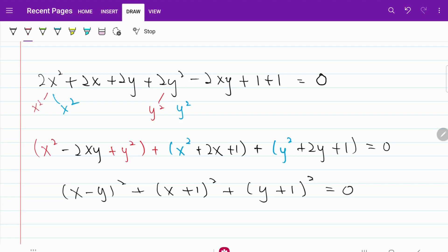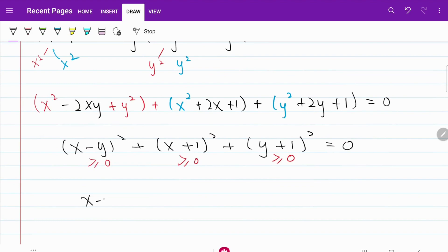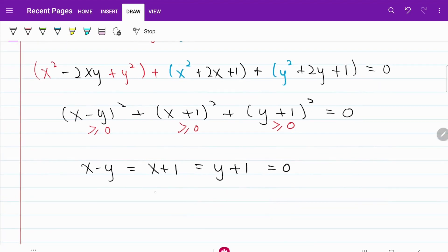I know that for each of the components, they have to be either bigger than or equal to 0 since they are a product of a square. And if we have a condition where three positive numbers adding to each other is equal to 0, that can only mean one thing. That means x minus y is equal to x plus 1 is equal to y plus 1 and is equal to 0. In other words, x is equal to y is equal to negative 1.